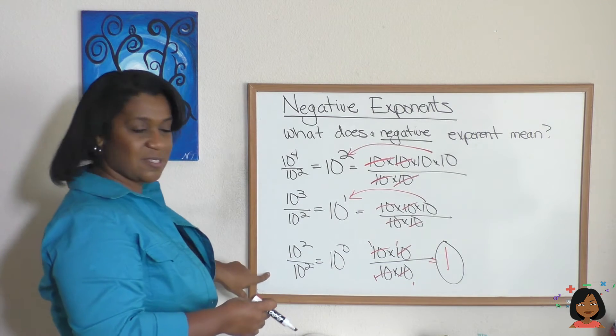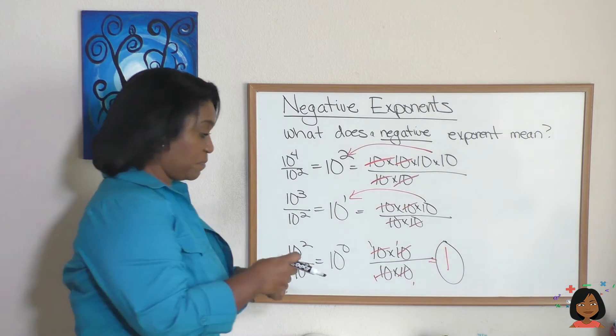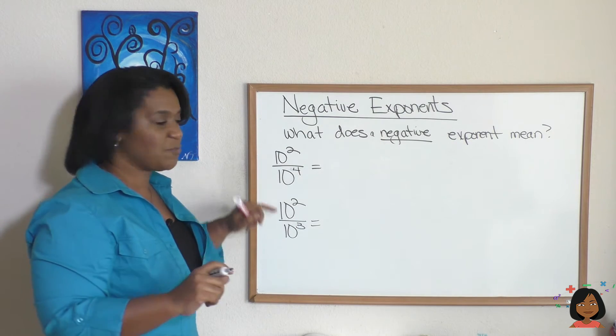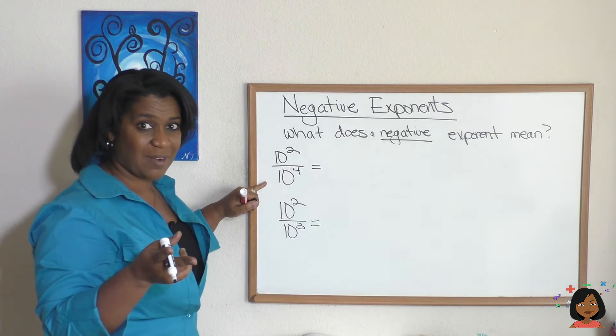So I've shown you this, but I want to show you something that's in reverse. So I'm going to erase this. Take a look at these two problems. I have flipped the exponents. I have 10 squared on top, 10 to the 4th on the bottom here.